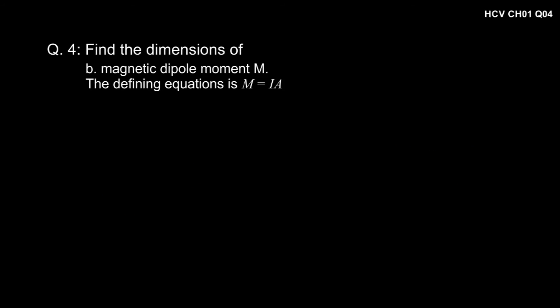In part B of this question, we have to find the dimension of magnetic dipole moment. The equation given in the question is M = I × A, where I is current and A is area.